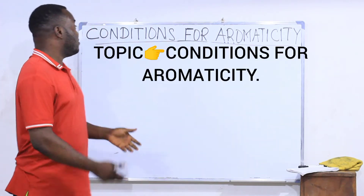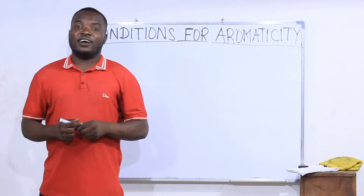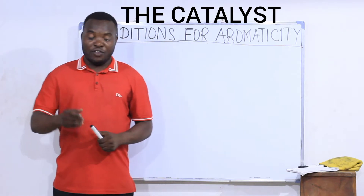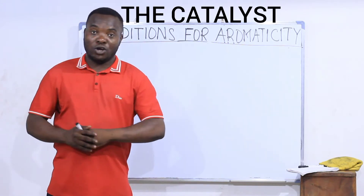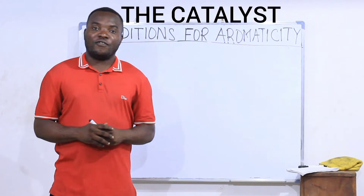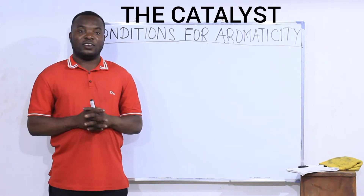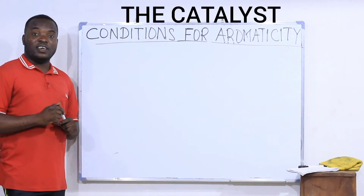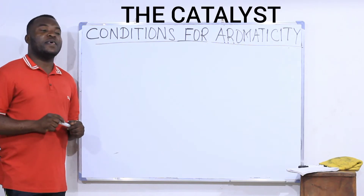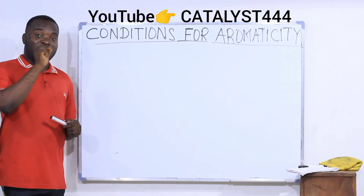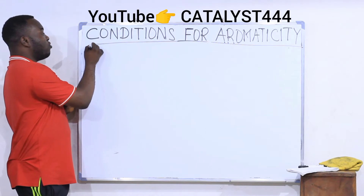Welcome. Today we'll be looking at conditions for aromaticity — that is to say, if a compound is presented to you and you are asked to determine whether it is aromatic or not, what are you going to do? Let's find out the qualities or properties an aromatic compound must have. There are four conditions a compound must satisfy. Remember, aromatic compounds are those that behave chemically as benzene.